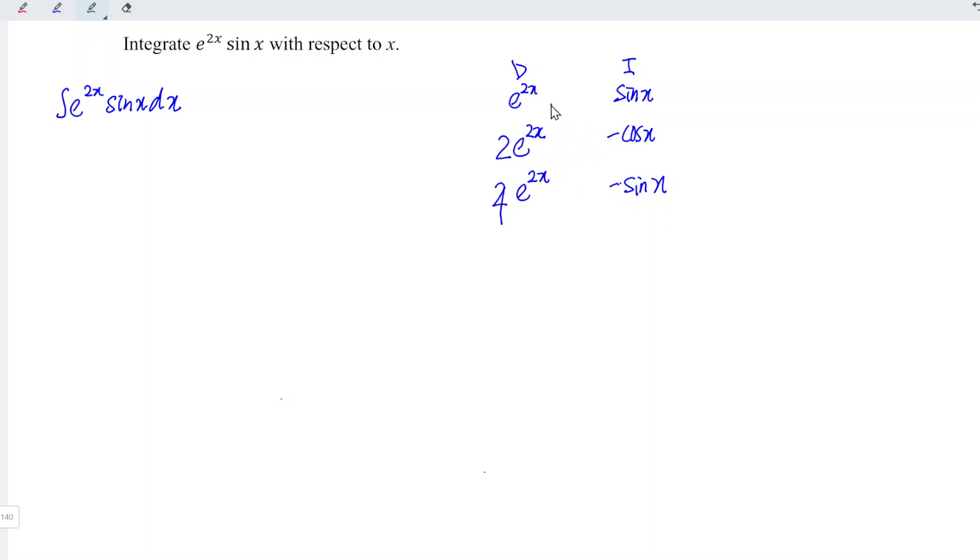Firstly, take e to the power of 2x times negative cos and the result, negative e to the power of 2x cos x. Next, we have 2 times e to the power of 2x times negative sin x. And the result is negative 2e to the power of 2x sin x.